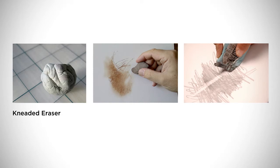First there's a kneaded eraser, and this is like a little ball of putty that you can do soft erasing with. It's great for removing gentle graphite marks that you've made with the side of your pencil.